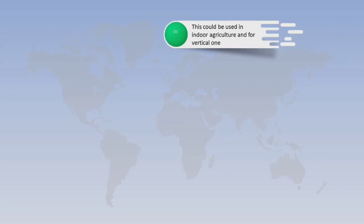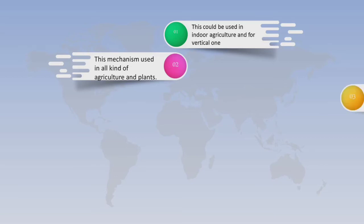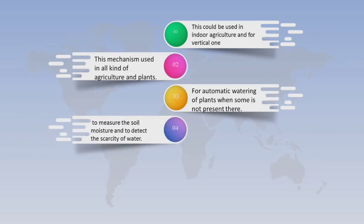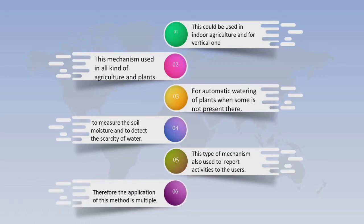In the next slide we have utilization or uses of our project. First, it could be used in indoor agriculture and vertical farming. Second, this system can be used in every kind of agriculture and for all kinds of plants. Third, it is used for automatic watering of plants when someone is not present. Fourth, it measures soil moisture and detects scarcity of water. Fifth, this mechanism is also used to report activities to users. Therefore, the applications of this method are multiple.